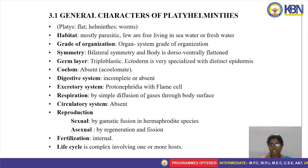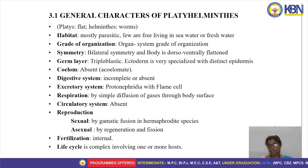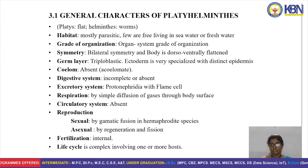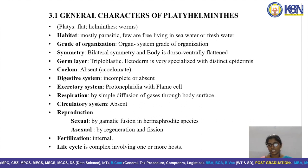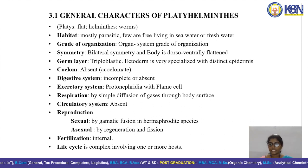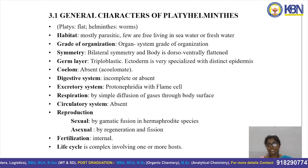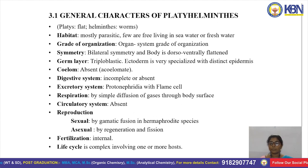The germ layer is triploblastic, meaning the body contains three layers: ectoderm, endoderm, and mesoderm. The ectoderm is specialized with a distinct epidermis as the outer layer. Coelom is absent, so these organisms are called acoelomates.